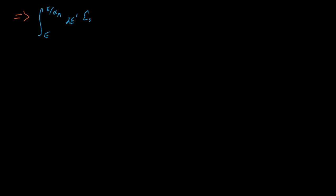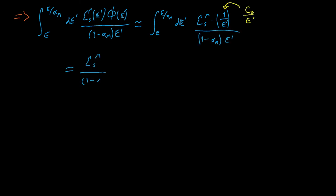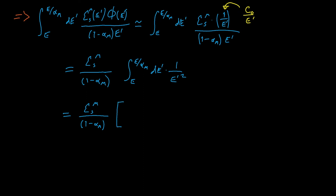From here we can simplify our moderator scattering source term. The scattering cross-section, which is constant, and the (1 - alpha) term can come out of the integral, leaving just 1/E². We can evaluate this integral to show that our moderator scattering source per energy E is simply equal to the moderator scattering cross-section divided by E.